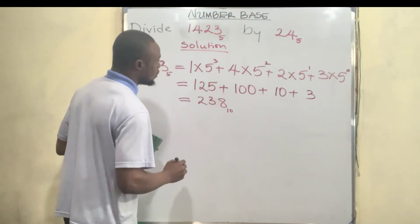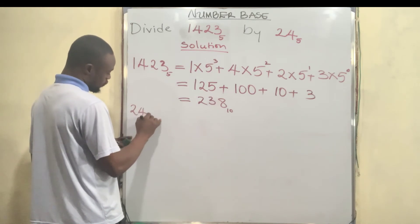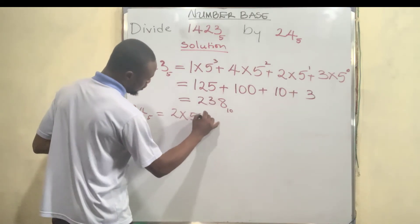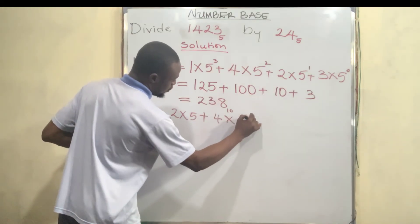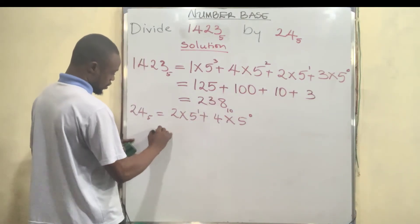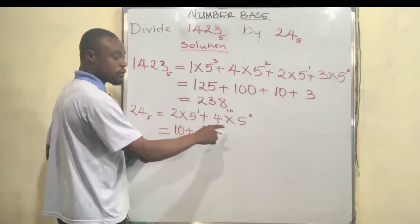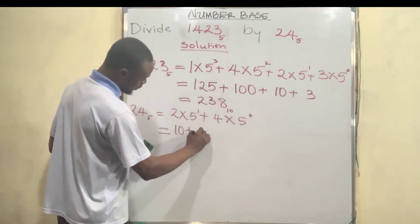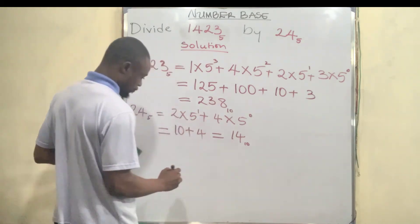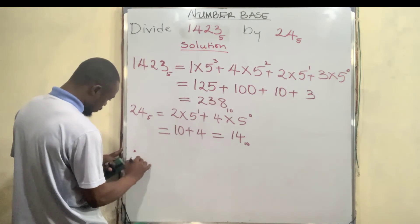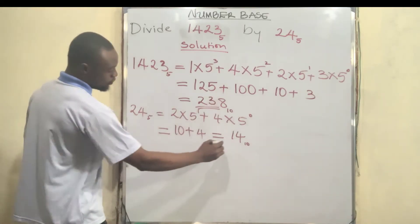The divisor 24 base 5 is equal to two times 5¹ plus four times 5⁰. Five to the power of one is 5, times 2 is 10. Five to the power of zero is 1, times 4 is 4. So 10 plus 4 is 14 base 10. Now that we have both numbers converted to base 10, we can divide.